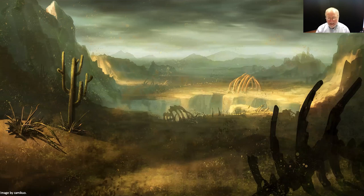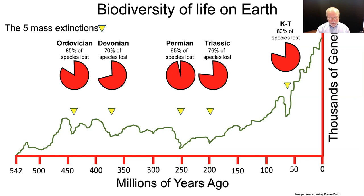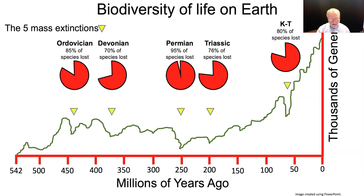Now as bad as that is, the KT mass extinction event is only ranked third in the list of major extinction events known to have occurred here on Earth. Fossil evidence indicates that of the five mass extinction events, the Permian was by far the worst. Although it's still debated, it is thought that massive volcanic eruptions were the primary cause. Toxic gas, ocean acidification, and perhaps a loss of the ozone caused a loss of 95% of all living species over a 50,000-year period of time.